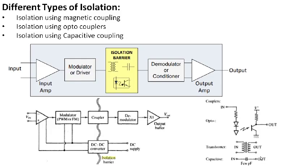There are different ways of achieving isolation: by using magnetic coupling, by using optocouplers, and by using capacitive coupling. In the basic block diagram of an isolation amplifier, the input signal is modulated — converted to a high frequency signal — and sent across the barrier to the measurement circuit side, where a demodulator converts it back to the low frequency signal. Optocouplers are used for optical isolation, transformers for magnetic isolation, and capacitors for capacitive isolation.